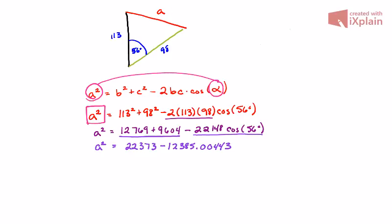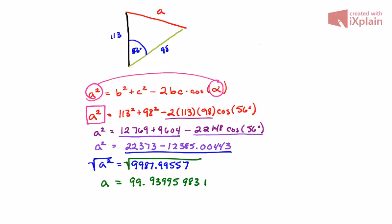Now we do the subtraction, which gives us a squared equals 9,987.99557. Then we take the square root of both sides, and this gives us a is equal to 99.93995983 feet, or we could simplify that down and say that's about 99.94 feet of wire.